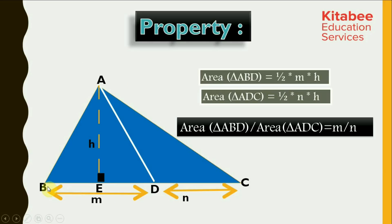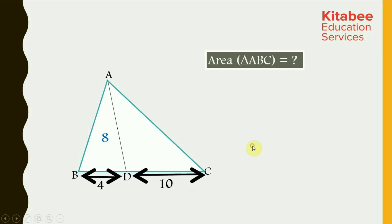We see that BC is divided in the ratio of M is to N, so the areas of these two triangles would also be divided in the ratio of M is to N. Let's take an example. Let us say that we have a triangle ABC in which BD is equal to 4 units and CD is equal to 10 units, and the area of triangle ABD is equal to 8 units.